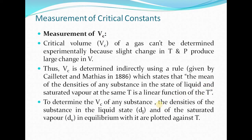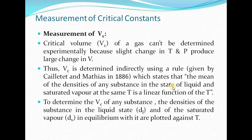To determine the critical volume, the densities of the substance in the liquid state and of the saturated vapour in equilibrium with it are plotted against temperature. Along curve AC, the density of vapours decreases with increasing temperature. Similarly, the density of the liquid decreases along curve BC with increasing temperature — because as temperature increases, vapour pressure increases, more vapours are formed, so density of vapours increases, while liquid molecules decrease so liquid density decreases along BC.